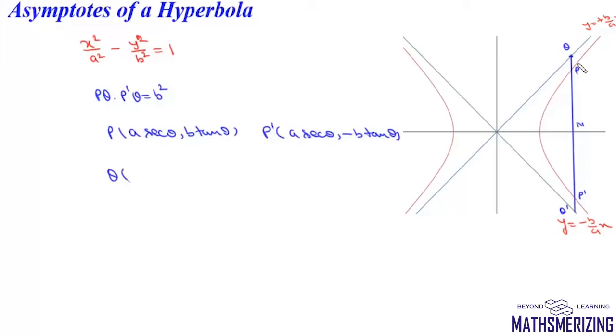We know that Q lies on the line through P and P', so its x-coordinate will be the same. Its x-coordinate will simply be a secant theta, and if we put x as a secant theta, we'll get y as b secant theta.